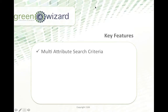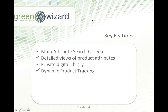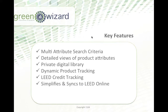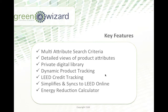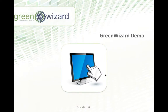Some key features before we jump into the demo: multi-attribute search criteria, detailed views getting into the product information, and an organization-specific library so you can save time by not repeatedly searching for the same information. For LEED and project tracking, we give you tools for specific granular data, LEED tracking, simplifying documentation, and pushing that information to the LEED forms in LEED Online. We also support the EA credit prerequisite and credit two for the energy reduction calculator, taking a lot of time off the table from manually entering data into forms.